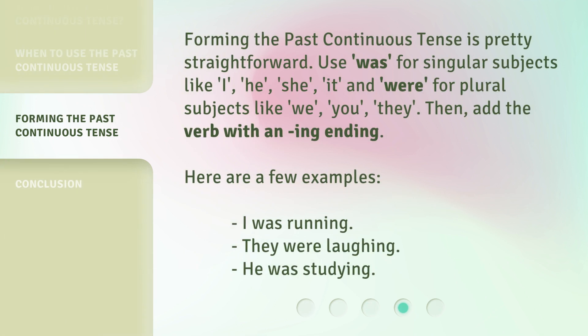Forming the Past Continuous Tense is pretty straightforward. Use was for singular subjects like I, he, she, it, and were for plural subjects like we, you, they. Then add the verb with an ing ending. Here are a few examples: I was running. They were laughing. He was studying.